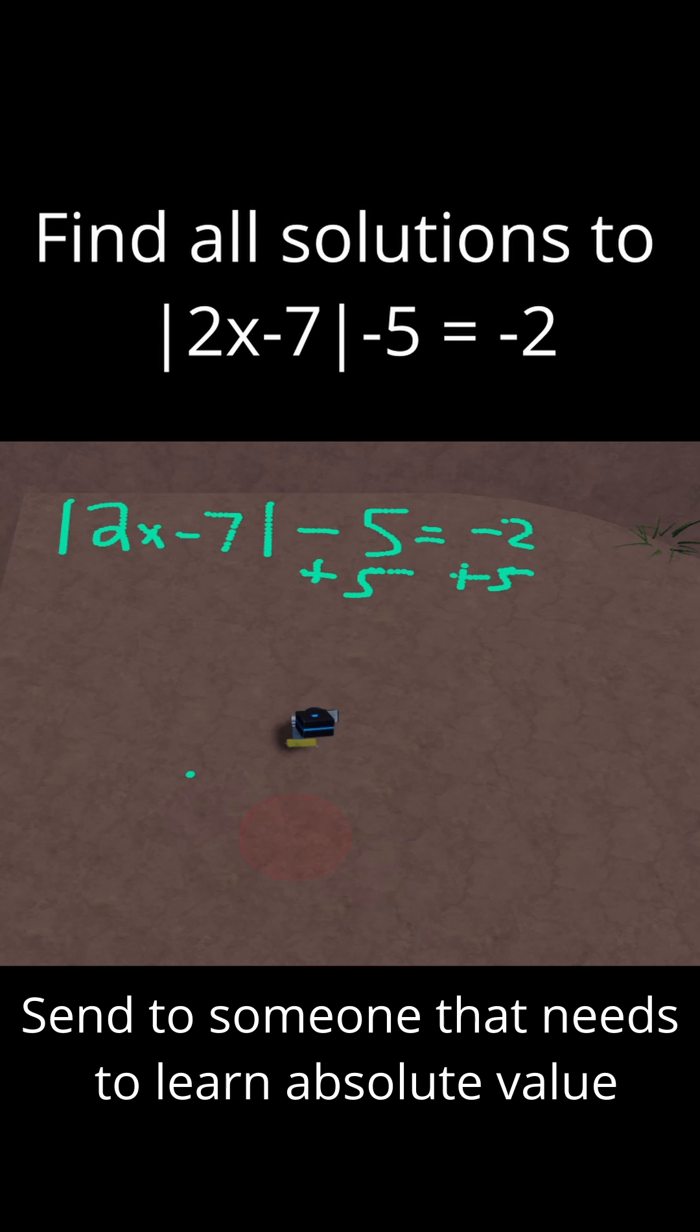So now let me just write both of these solutions out. We now have that x is equal to positive 5 and positive 2. Now remember, I said that for absolute value equations, it's always good to check your answers. So let me just do it really quick.